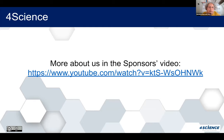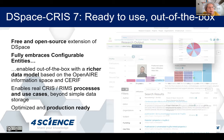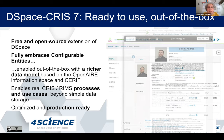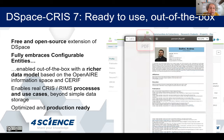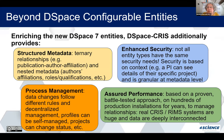What is DSpace-CRIS, and particularly DSpace-CRIS 7? It is a ready-to-use, out-of-the-box, free and open source extension of DSpace. It fully embraces configurable entities that are enabled out of the box with a richer data model based on the OpenAIRE information space and SRIF to model the research domain. It enables real research information management processes and use cases beyond simple data storage.